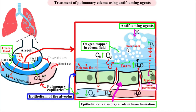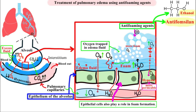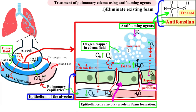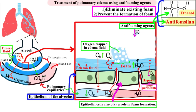A typical anti-foaming agent consists of oil, silicone, and certain alcohols, but the majority of them cannot be used inside the human body. That's why we'll focus on ethanol and anti-foam silan as anti-foaming agents used in pulmonary edema. Anti-foaming agents eliminate existing foam and prevent the formation of further foam.